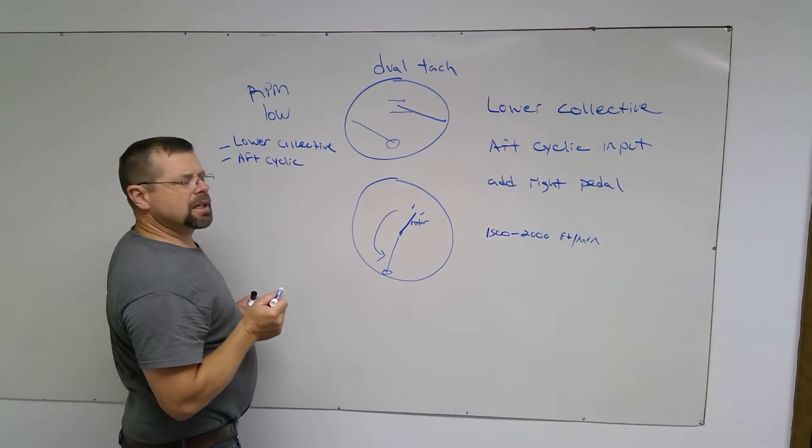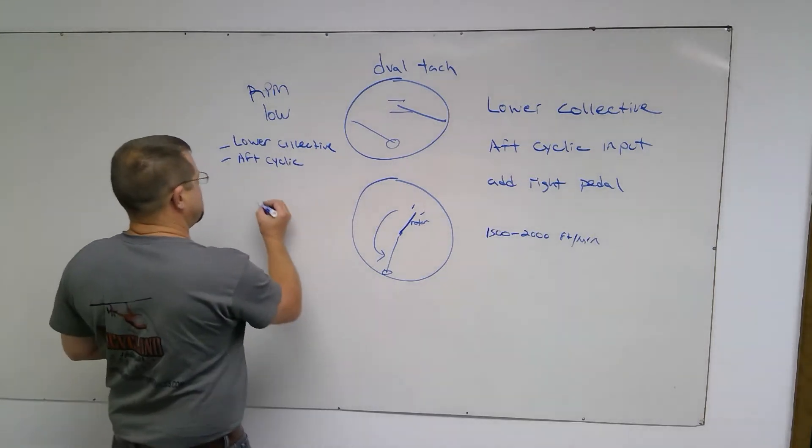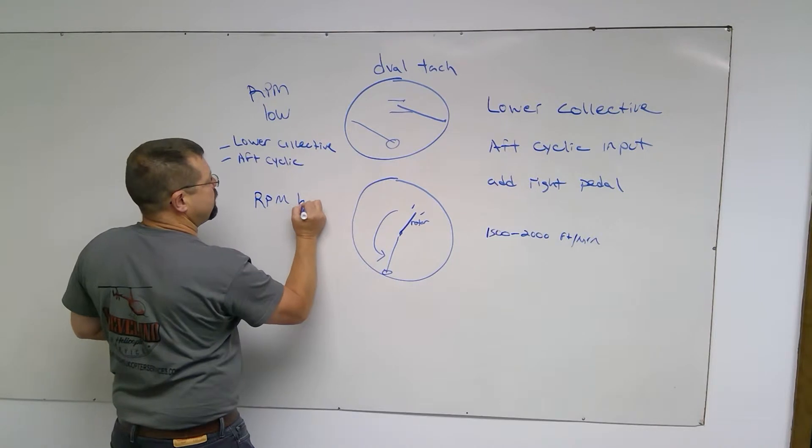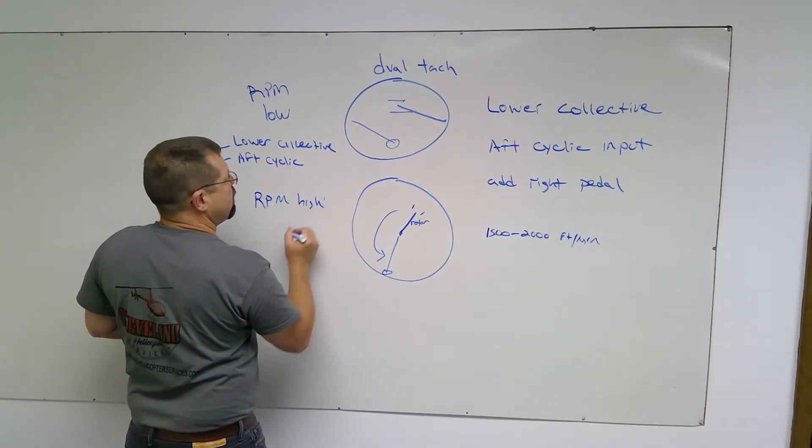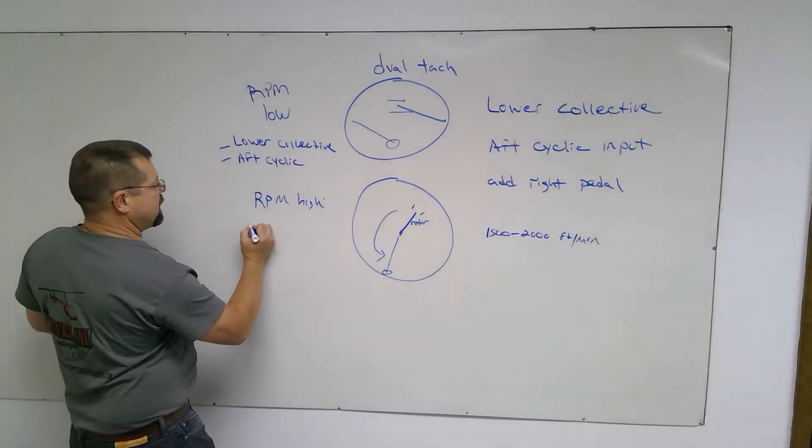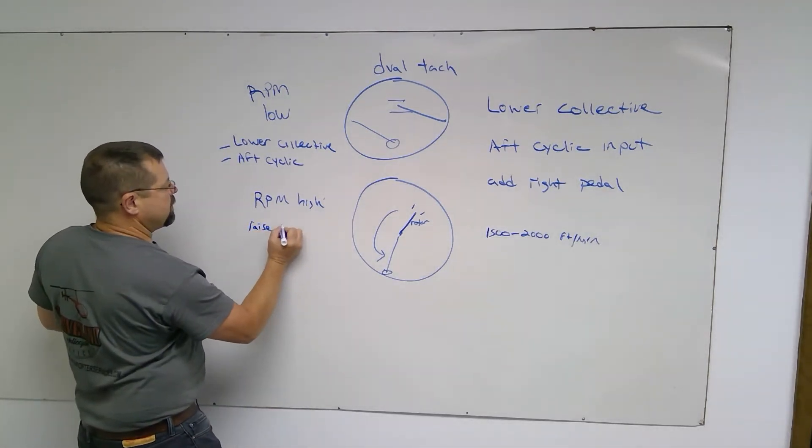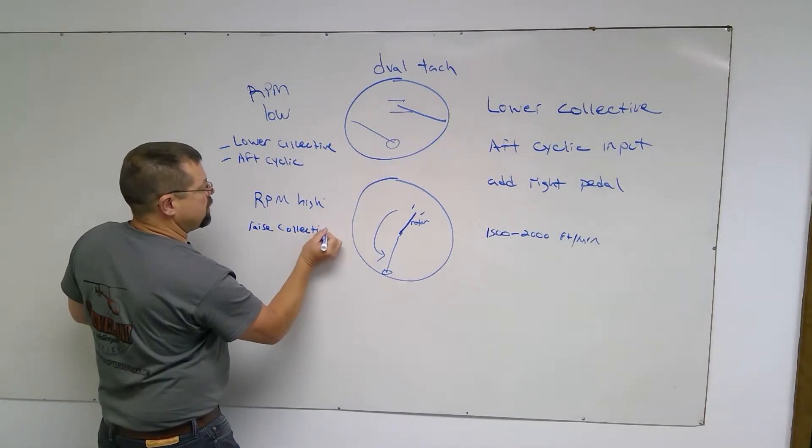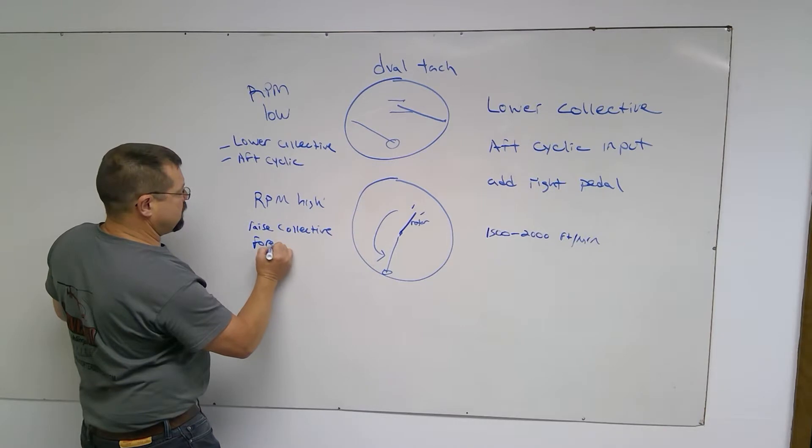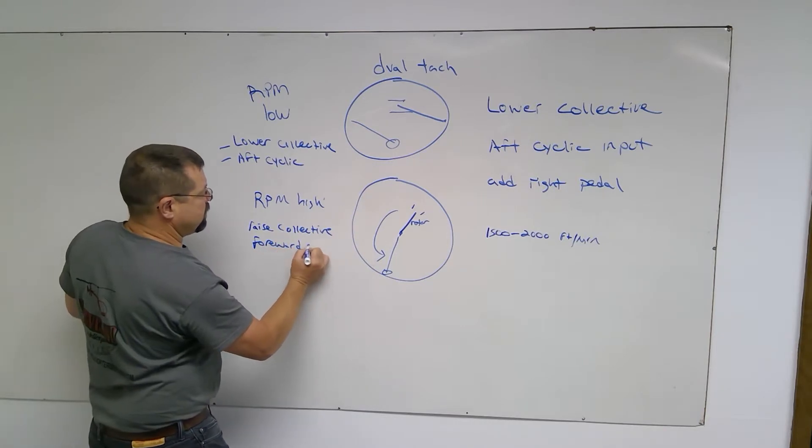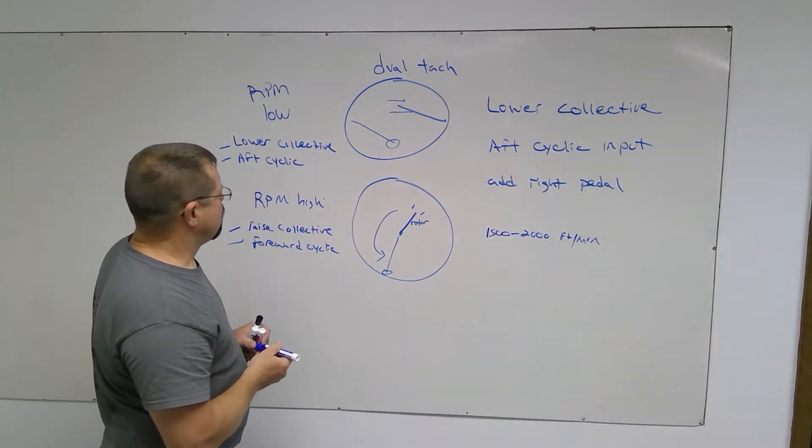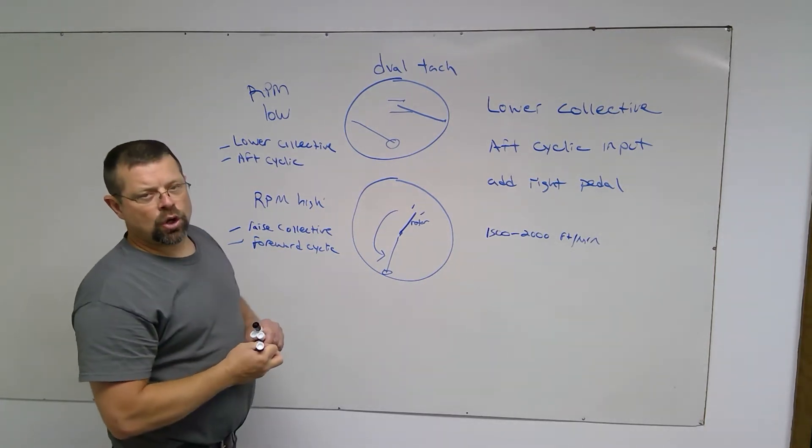Either lowering collective or coming aft on the cyclic. If the RPM goes high past the operating range to the top side, the pilot can raise collective the appropriate amount or go forward on the cyclic. One or both will accomplish lowering the RPM.